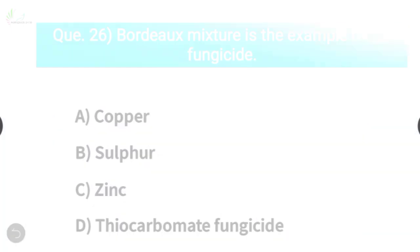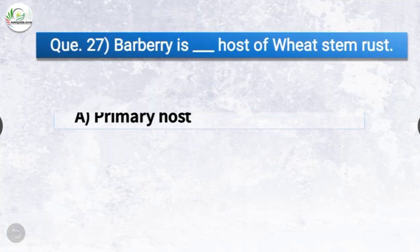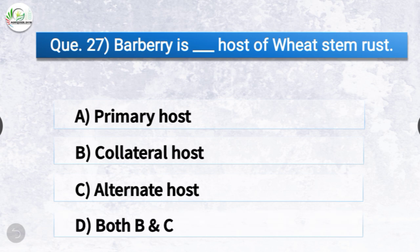Question number twenty-seven: Barberry is dash host of wheat stem rust. The options are primary host, collateral host, alternate host, or both B and C. The correct answer is option C, alternate host. Barberry is the alternate host of wheat stem rust.